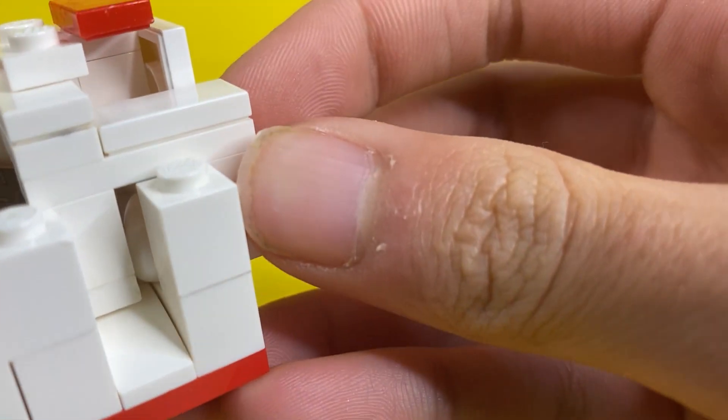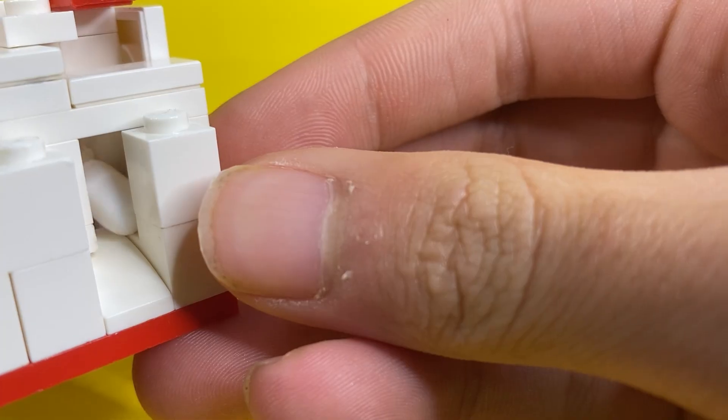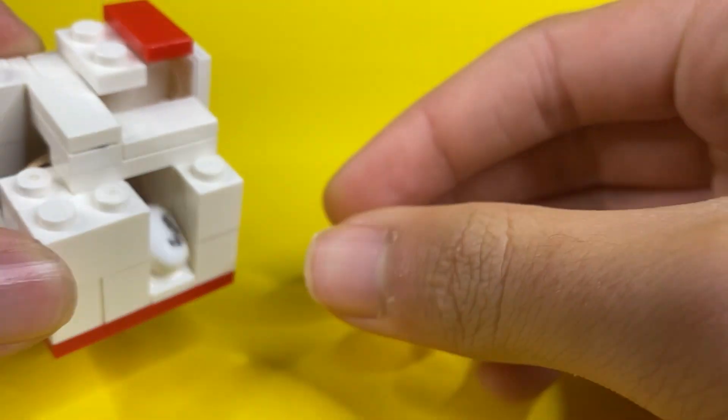After which the tic-tac falls into the slot and when you push the draw back, you get access to the tic-tac.